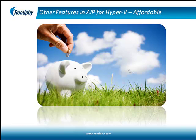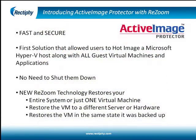Active Image Protector's flexible licensing allows the user to install a copy on one physical host machine and restore an unlimited number of virtual guest machines and servers, potentially saving you thousands of dollars. Rectify Corporation's Active Image Protector with its patent-pending resume technology is the perfect solution for your Microsoft Hyper-V environment, built from the bottom up with speed, security, and the features you need.